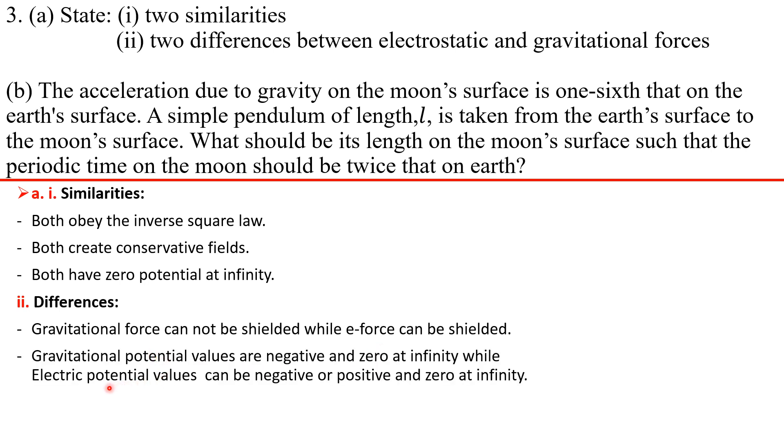And then you have another difference: gravitational potential values are negative and zero at infinity, while electric potential values can be negative or positive and zero at infinity. Why is it negative or positive for electric potential values? Because you can have a negative or positive generating charge.